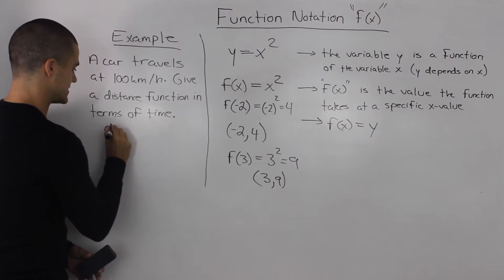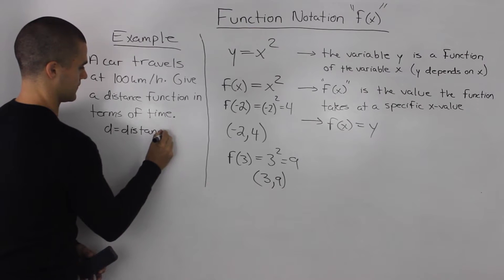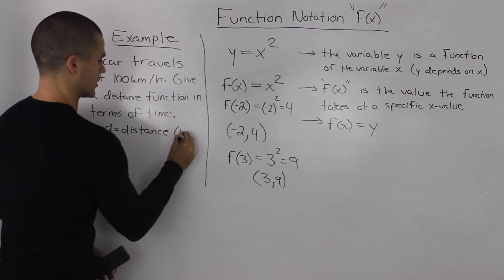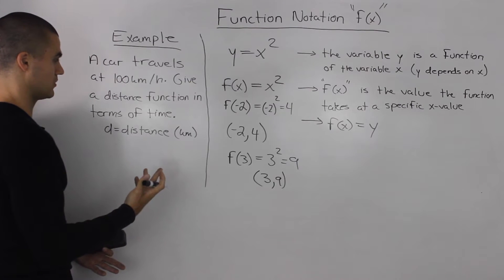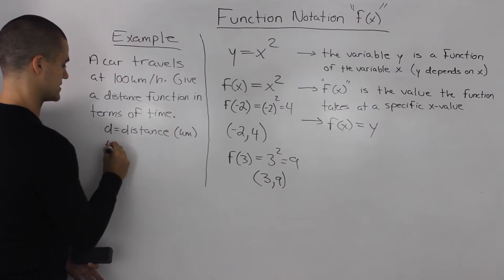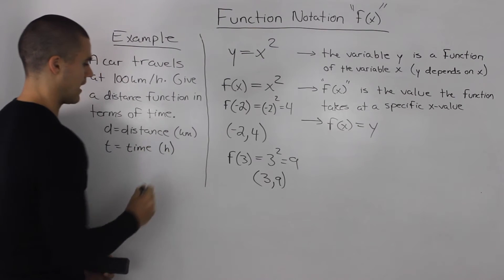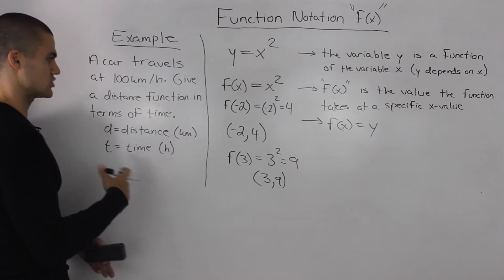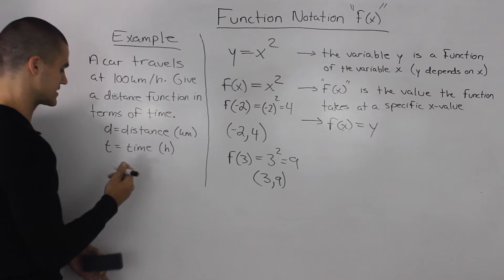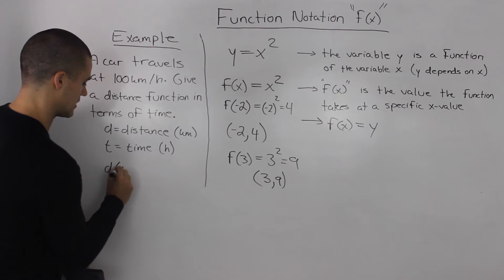So let's say we let d equal distance in kilometers. Now d is the dependent variable and then t equals time in hours. Now a distance function in terms of time, because distance is the dependent variable, we could represent that as d of t.